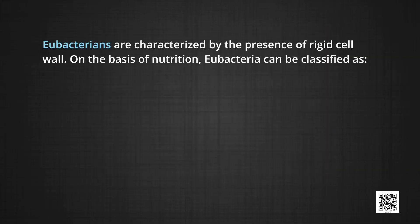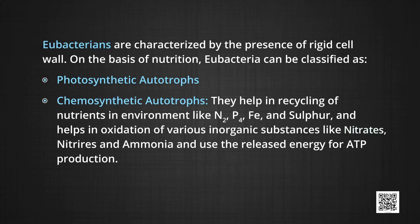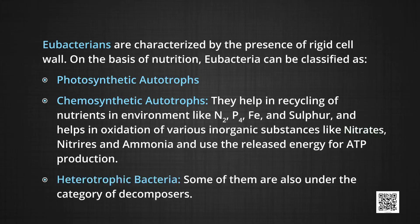Eubacteria are characterized by the presence of a rigid cell wall. On the basis of nutrition, eubacteria can be classified as: first, photosynthetic autotrophs; second, chemosynthetic autotrophs — they help in recycling of nutrients like nitrogen, phosphorus, iron and sulphur, and help in oxidation of inorganic substances like nitrate, nitrite and ammonia, using the released energy for ATP production; and third, heterotrophic bacteria — some are decomposers, some help in production of curd, antibiotics and nitrogen fixation in leguminous plants, while some eubacteria are pathogens causing diseases in animals, plants and humans.